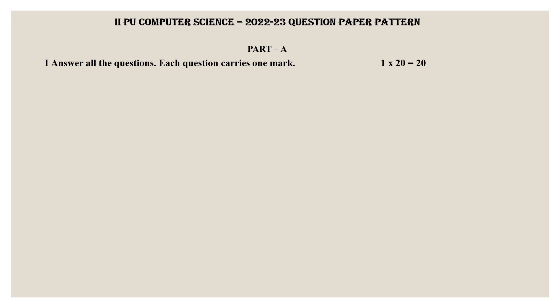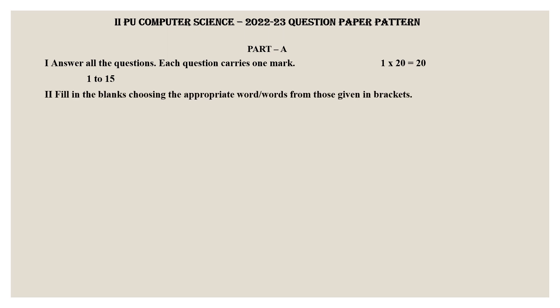The PU board released a new pattern to make it easier for students. Part A is the first section: answer all questions, each question carries one mark — that is 1 into 20, equal to 20 marks. Question numbers 1 to 15 are the first main. The second main is fill in the blanks, choosing the appropriate words from those given in brackets — question numbers 15 to 20.